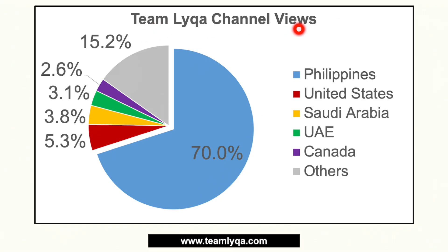The title says 'Team Laika Channel Views' — so this is just a mock-up, a sample. When it says Team Laika channel views, it means the total number of views of the channel for that given period. Now, each part is shown in the legend table with different colors or markings. The baby blue is the Philippines, which is 70% — meaning 70% of Team Laika's viewers are from the Philippines, and that's not far from reality. The 5.3% is from the United States, 3.8% from Saudi Arabia, 3.1% from UAE, 2.6% from Canada, and 15.2% is 'Others' — meaning every other country out there that has views from that country.